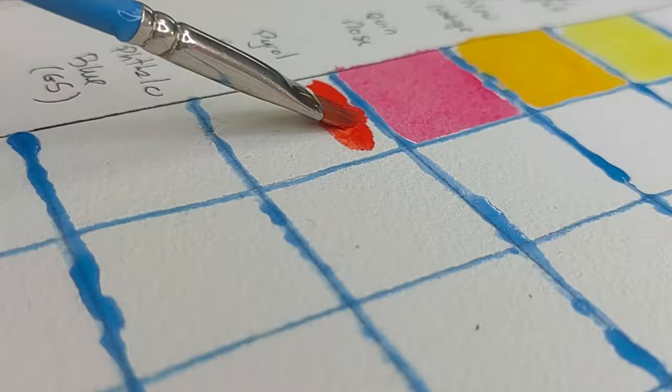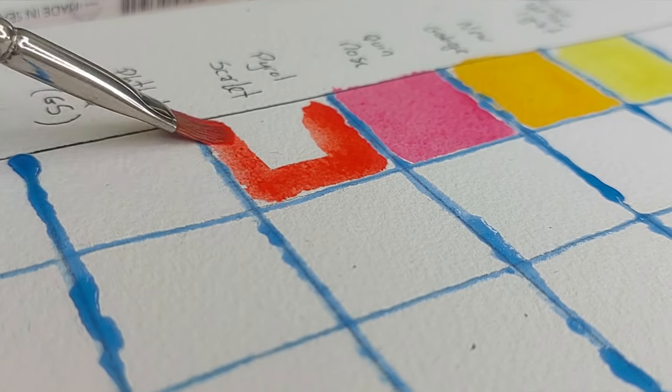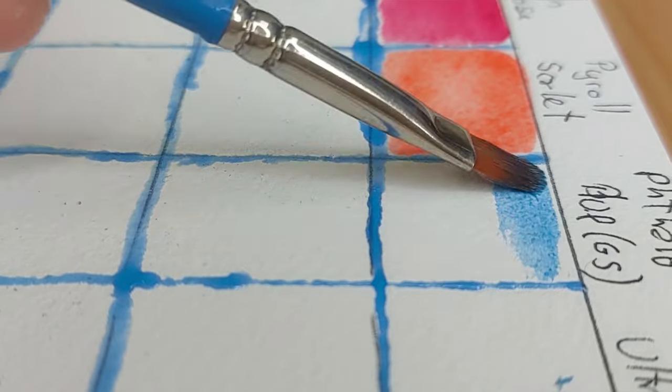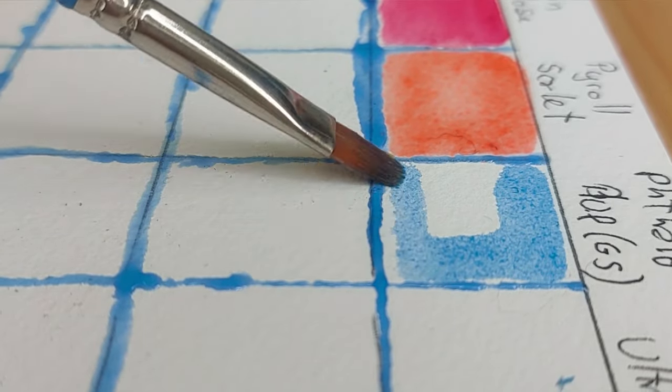But unfortunately, so is the potential for muddy colors when you're mixing cools with warms. So I guess I'm taking big risks today here guys, because we are making a color chart. But you know what? If any paints can actually take being mixed, the warms with the cools, that's definitely Daniel Smith from what I can see so far.